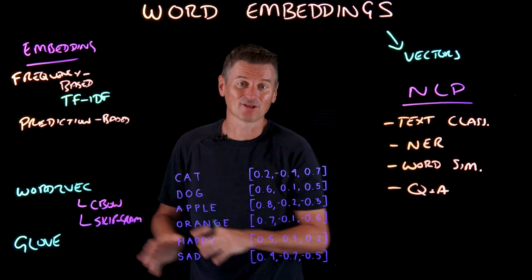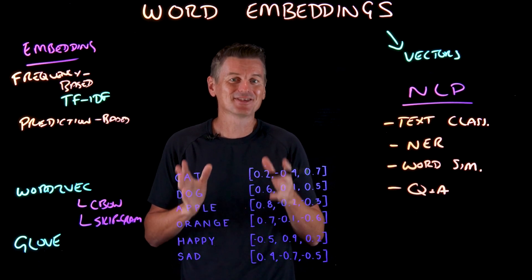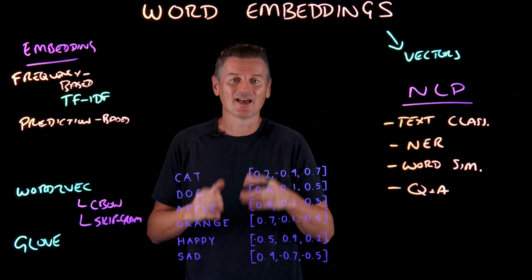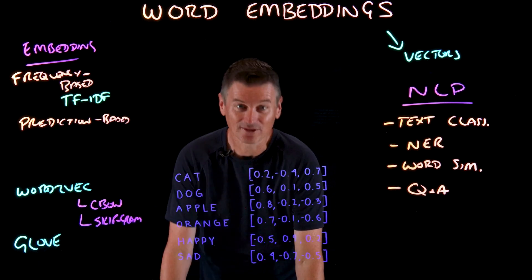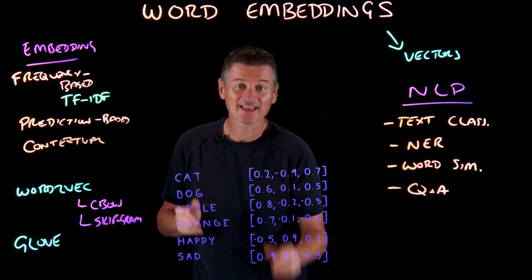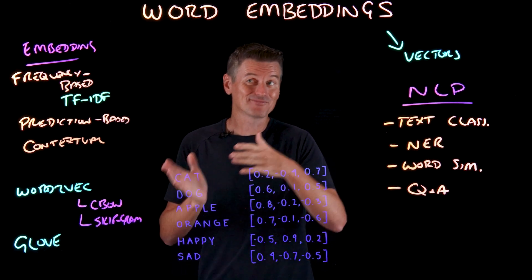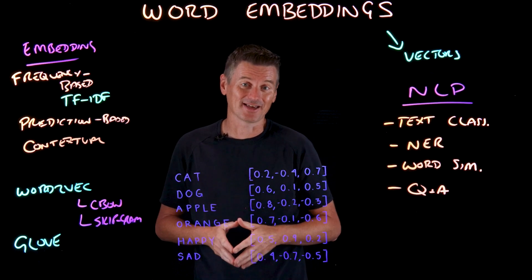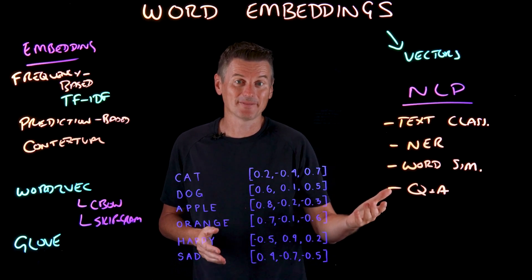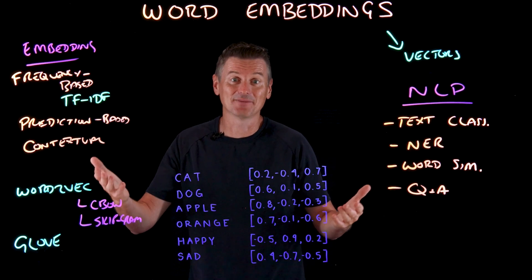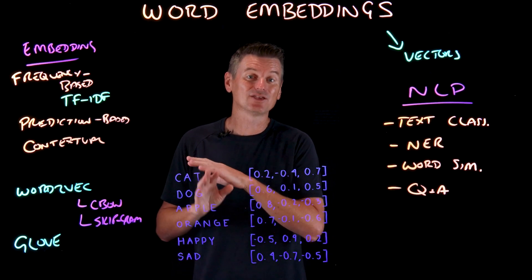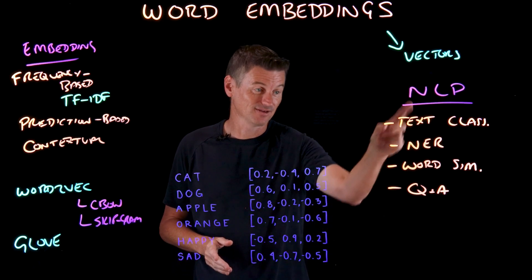While these word embedding models continue to be valuable tools in NLP, the field has seen significant advances with the emergence of transformers. While traditional word embeddings assign a fixed vector to each word, transformer models use a different type of embedding called contextual-based embedding, where the representation of a word changes based on its surrounding context. For example, in a transformer model, the word 'bank' would have different representations in 'I'm going to the bank to deposit money' versus 'I'm sitting on the bank of a river.' This context sensitivity allows these models to capture more nuanced meanings and relationships between words, leading to improvements across various NLP tasks.